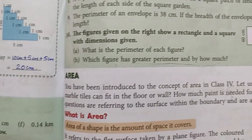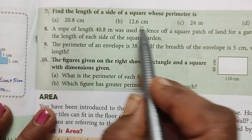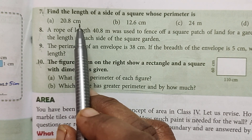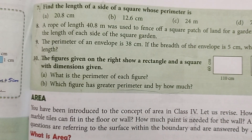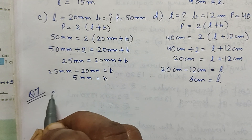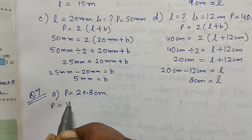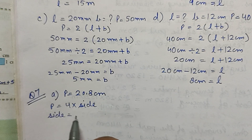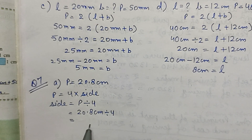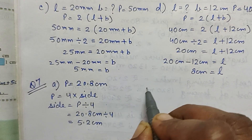Question number 7: find the length of a side of a square whose perimeter is given. The perimeter of a square formula is 4 into side, so side equals perimeter divided by 4. Part A: perimeter is 20.8 cm. Side equals 20.8 divided by 4, which equals 5.2 cm.